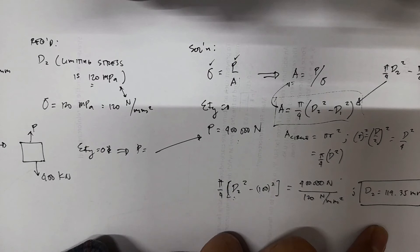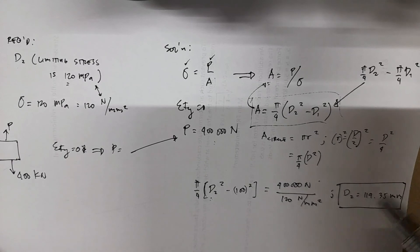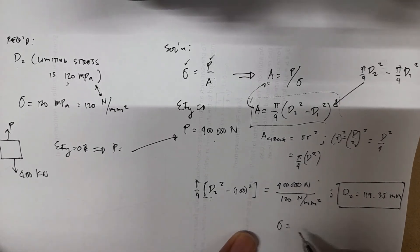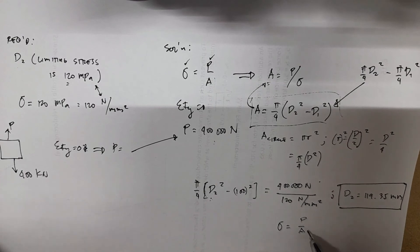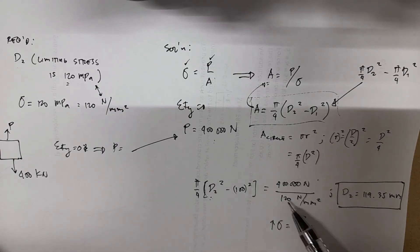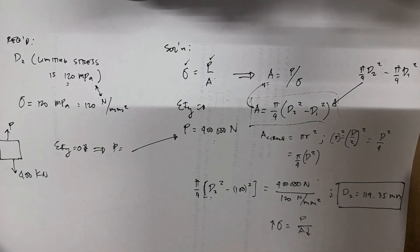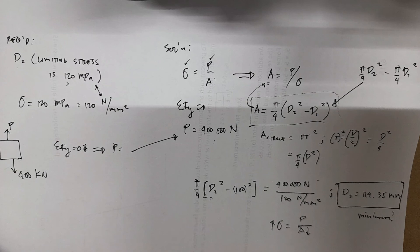This is now your minimum value of outside diameter, so that your limiting stress of 120 MPa will not be exceeded. Take note that your stress is expressed as P over A, so if you use a smaller diameter, the area is reduced, therefore the stress is increased. The 120 may be exceeded, so you can use a diameter of 120 millimeters, 125, as long as it's larger than 119.35. This is your minimum diameter so that your limiting stress of 120 MPa is not exceeded.